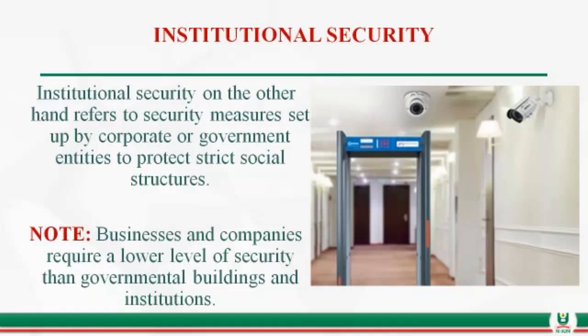Note that businesses and companies require a lower level of security than governmental buildings and institutions, because government institutions are more exposed to risk and violence than businesses and companies. Businesses typically try to secure their premises using CCTV cameras, whereas government institutions need to protect both people and assets, as well as information.